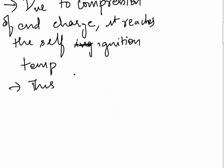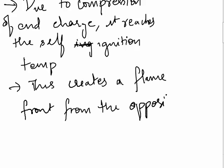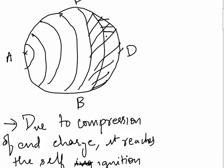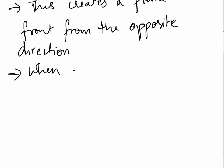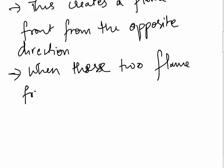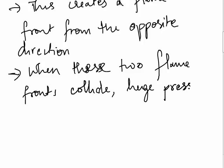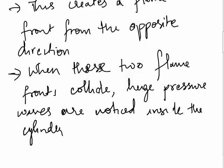Now as it reaches the self-ignition temperature, the end charge produces a flame front from the opposite direction. That is C, C', D. Now there are two flame fronts. One is from ABB' and the other one is from DCC'. And these two flame fronts collide with huge pressure waves that are noticed inside the cylinder.